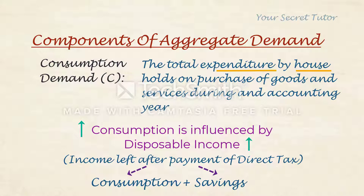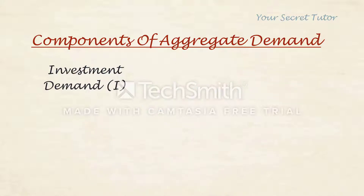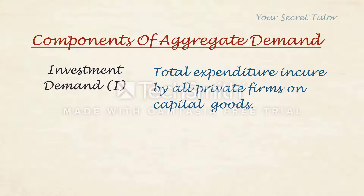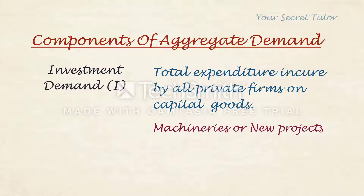Next is investment demand, denoted as I. It is the total expenditure incurred by all private firms on capital goods. Businesses invest in capital goods such as machinery and equipment — that is the investment expenditure.